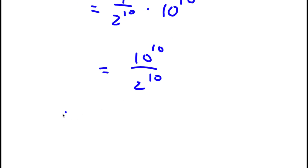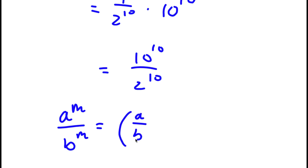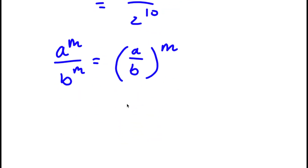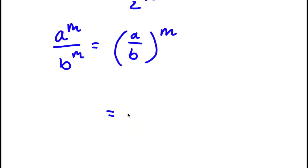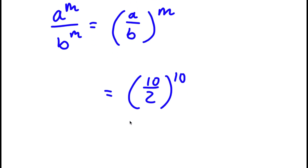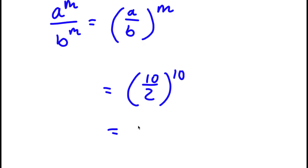Using the rule a to the power of m over b to the power of m equals a over b to the power of m, I get 10 to the power of 10 over 2 to the power of 10 equals 10 over 2 to the power of 10. Since 10 over 2 is 5, my answer is 5 to the power of 10.